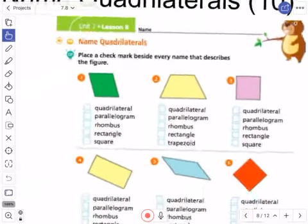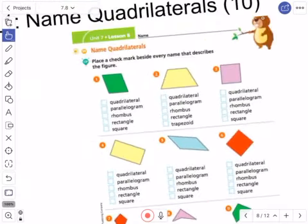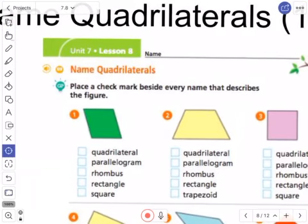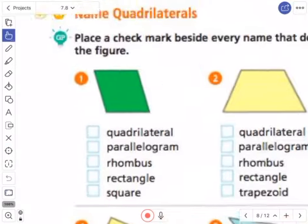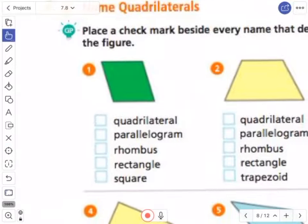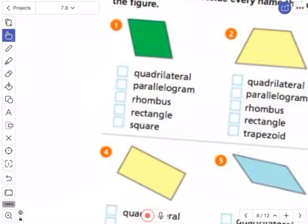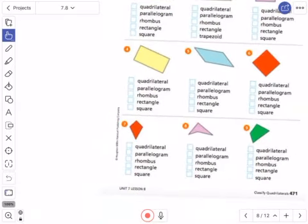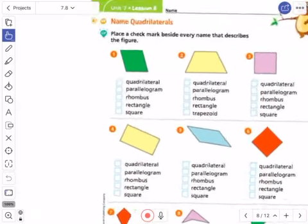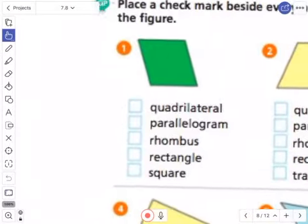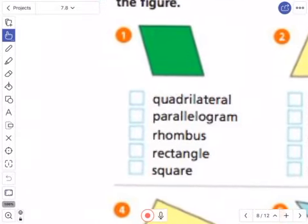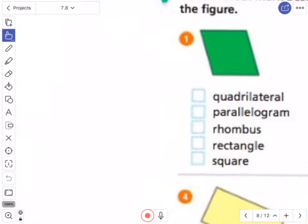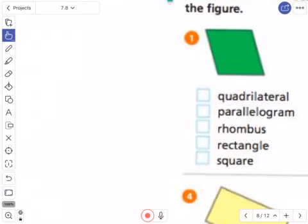So at the top of page 471, you're going to see the directions. Place a check mark beside every name that describes the figure. Okay, well, so I'm going to look at this. This is all about vocabulary. You're going to see every single shape on this page has the same five words. Quadrilateral, parallelogram, rhombus, rectangle, square. I'm going to leave those four words there. And I'm just going to review what those mean.